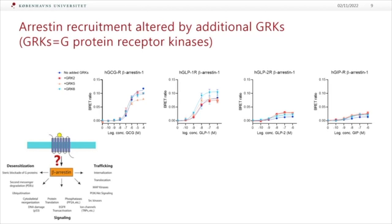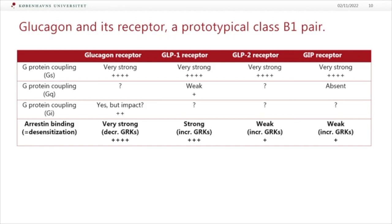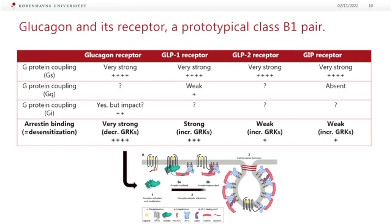What is regulating this arrestin recruitment? The GRKs — G-protein receptor kinases — are important for the initial phosphorylation. If we co-express more GRKs, we see inhibition of the glucagon receptor signal, whereas we see somewhat increased signal from the GLP-1 receptor. For GIP and GLP-2, which are really low in their ability to recruit arrestin, they both improve if we overexpress GRKs. They are very different in their ability to recruit arrestin and the regulation of that. Arrestin is important for internalization and desensitization.